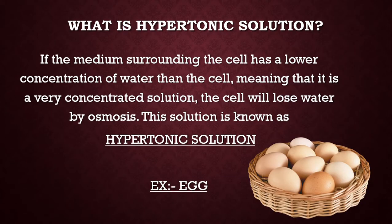Now let us do the second experiment — the hypertonic solution. What is the definition of a hypertonic solution? The medium surrounding the cell has a lower concentration of water than the cell, meaning it is a very concentrated solution. The cells will lose water by osmosis. This solution is known as a hypertonic solution. For example, an egg.